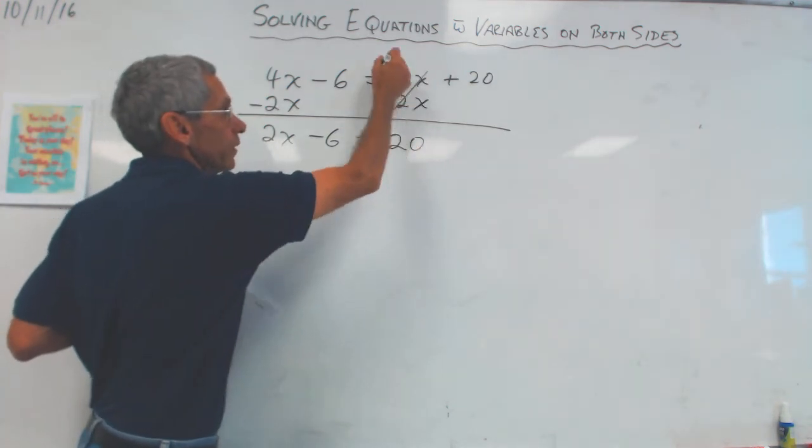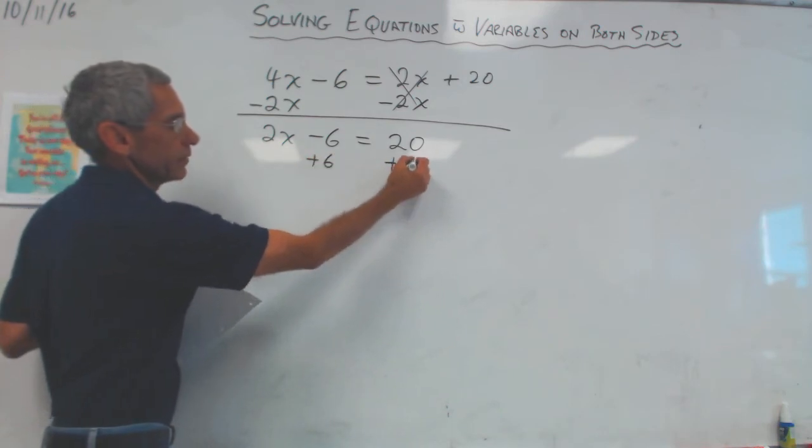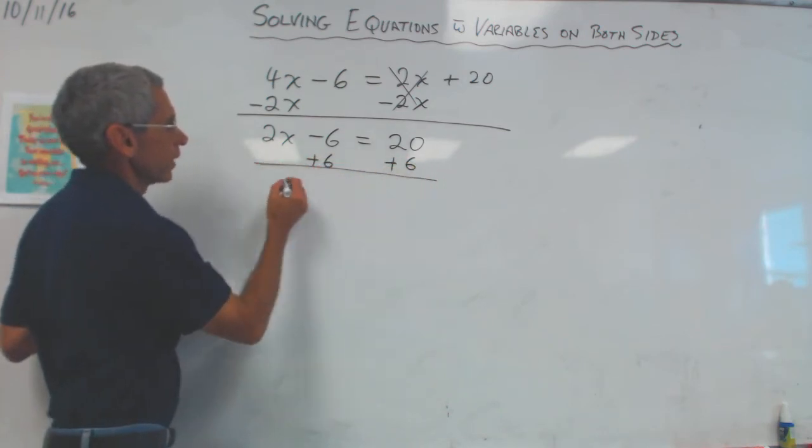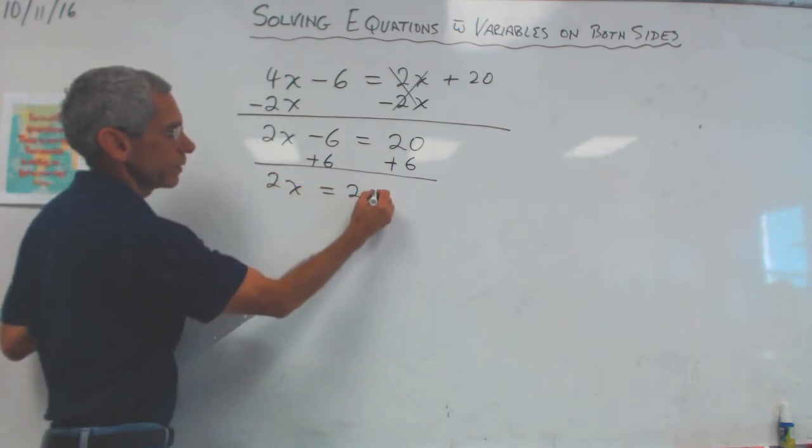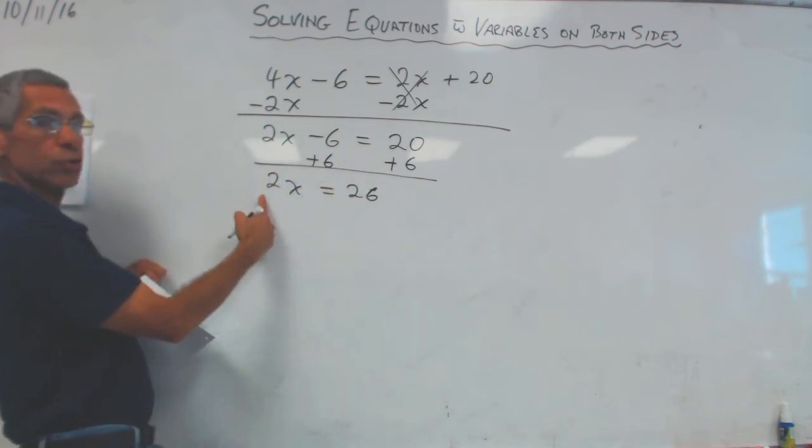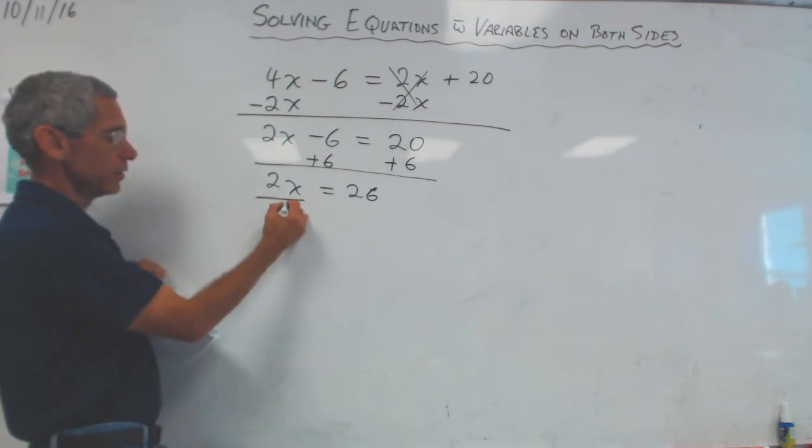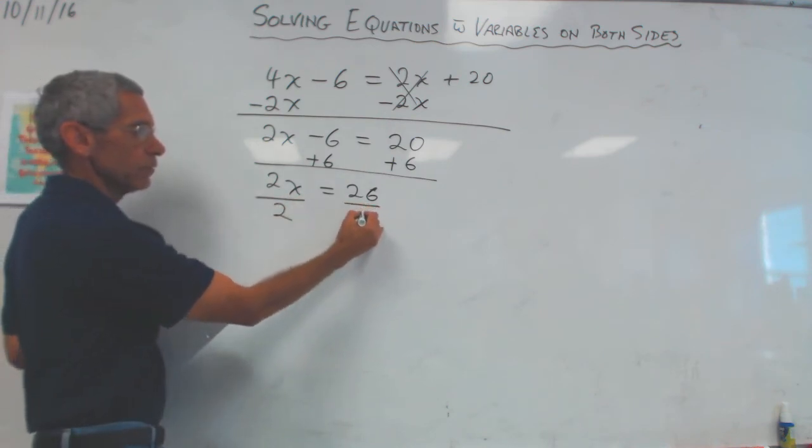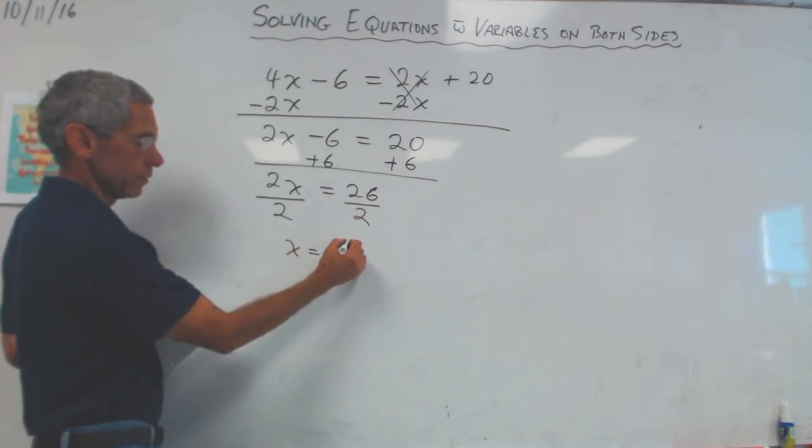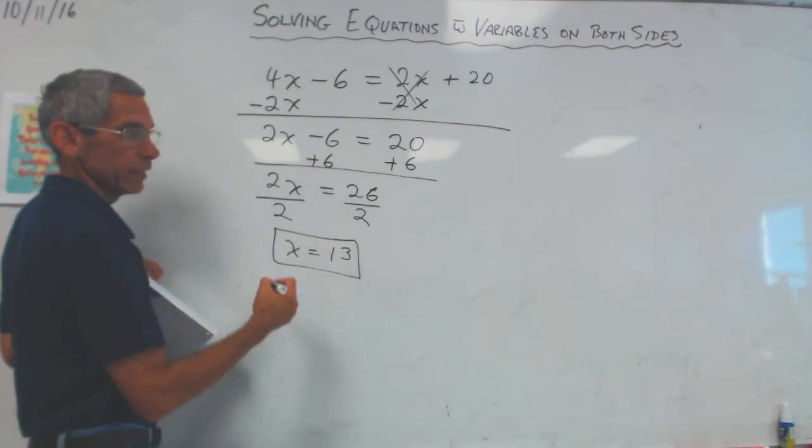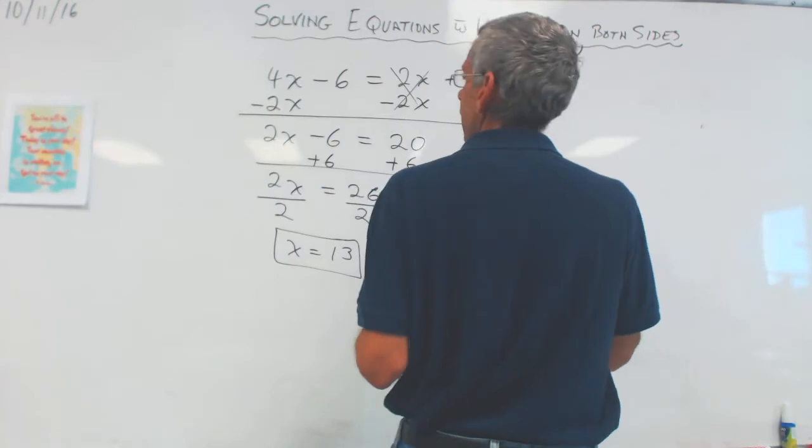Because these cross out. Now it's easy. Add 6 to both sides. Add 6. Draw my line. I've got 2x is equal to 26. And now 2 times x, the opposite of times, is divide. Divide by 2. Divide by 2. X is equal to 13. Try to put your answers in a box, by the way. A box or a circle or something. An oval. It really helps a lot.